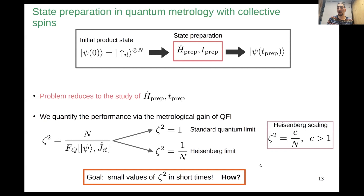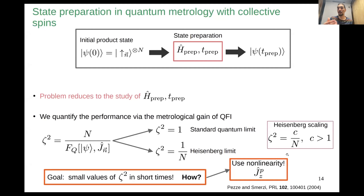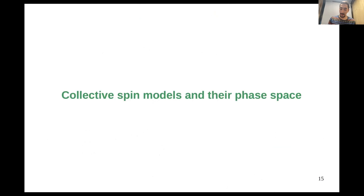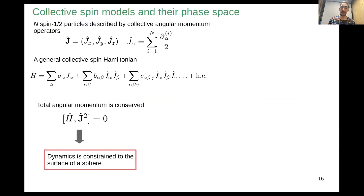The goal is to have a strategy that generates large values of the metrological gain in the shortest time possible. The answer is to use nonlinearity. We focus on families of collective spin Hamiltonians with terms that are nonlinear functions of the components of the collective angular momentum. To analyze this, as the title suggests, we exploit the geometry of phase space.